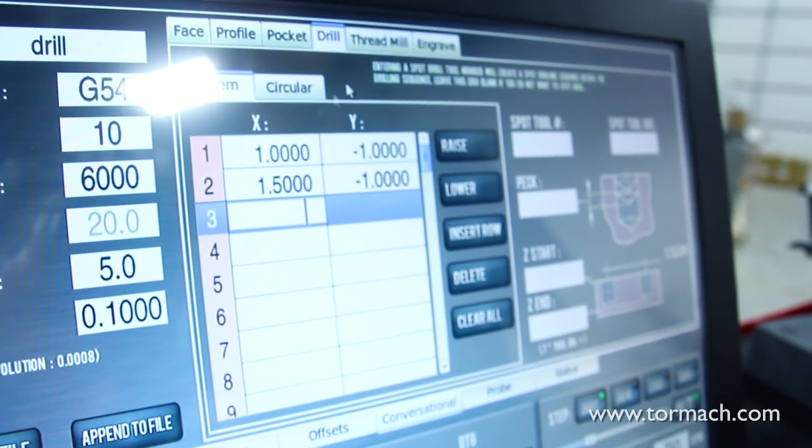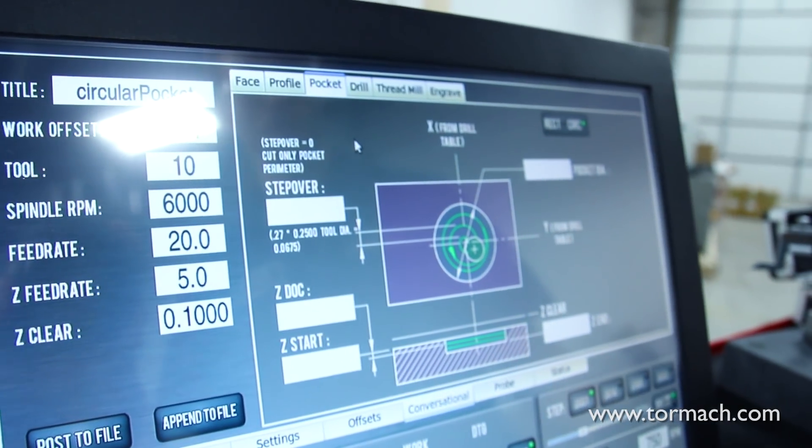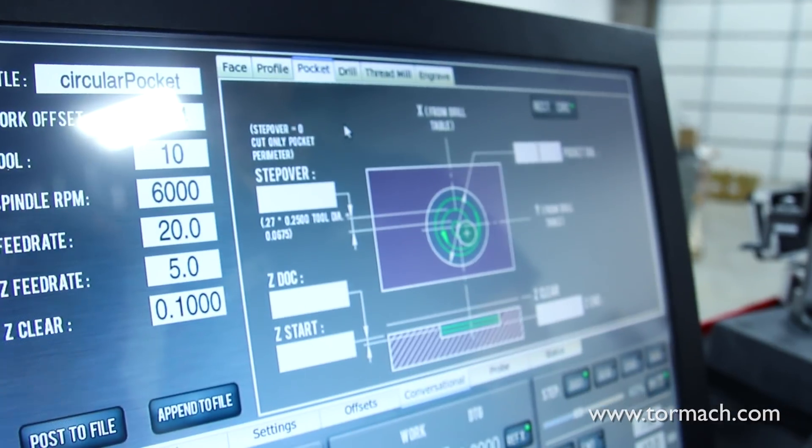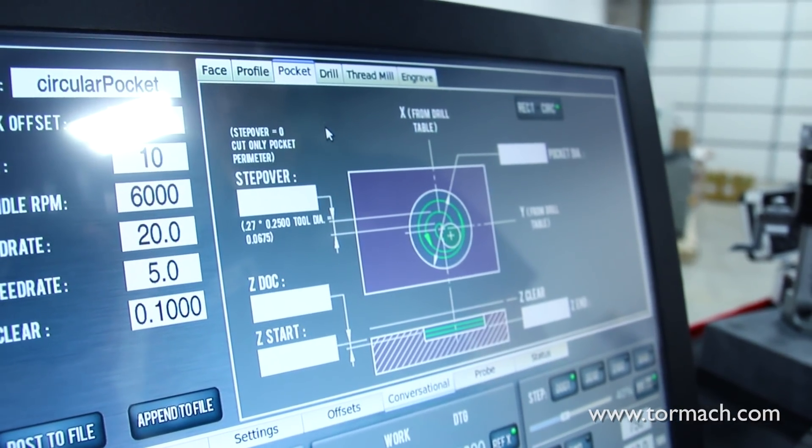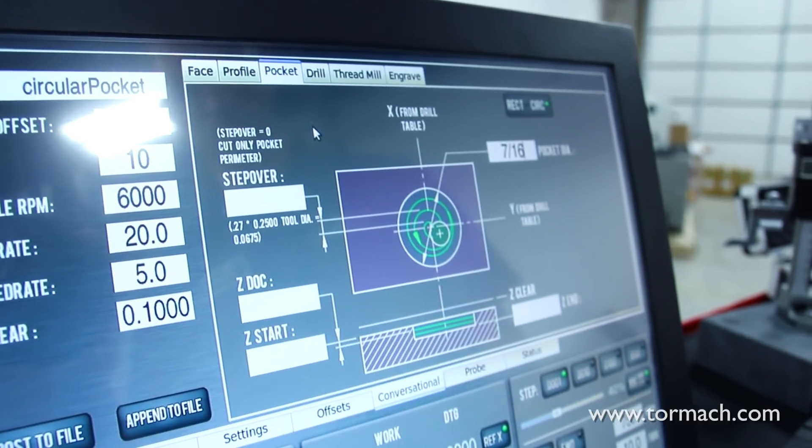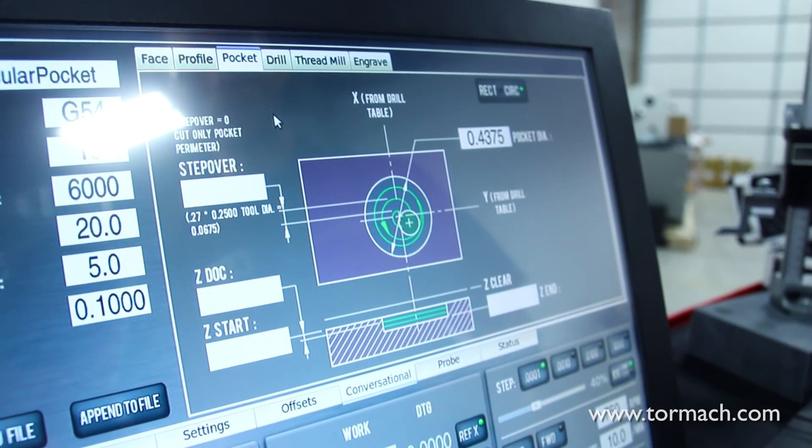Then we just jump back over to our pocketing tab to enter the rest of our information. We need to choose our pocket diameter. We're going to machine a 7/16ths diameter hole. We can use PathPilot here to do the math for us. We can just enter 7/16ths, press enter, and it'll put it in decimal format for us.